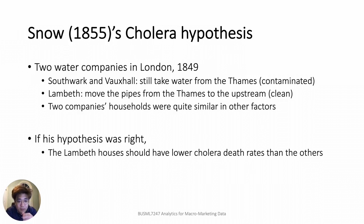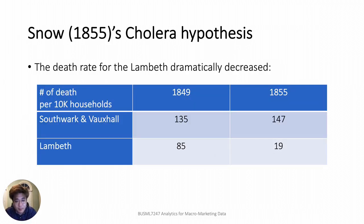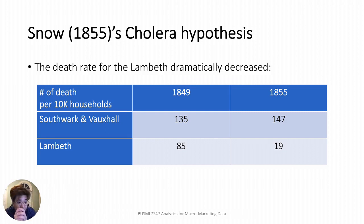Dr. Snow carefully collected data on water sources to show the relationship between water purity and mortality. If his hypothesis was right, the Lambeth households should have lower cholera death rates than the others. And the data clearly proved his hypothesis. This table shows the number of deaths per 10,000 households for each company in 1849 and 1855. The death rate for the Lambeth dramatically decreased — from 85 to 19 — whereas the death rate for the Southwark and Vauxhall slightly increased.